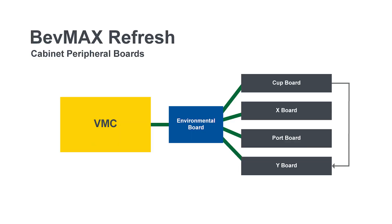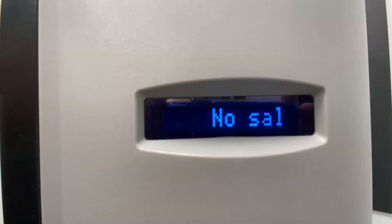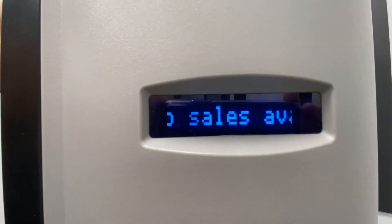If any of these boards are not communicating to the environmental board, which communicates to your VMC, then you have a communication issue and it will show no sales available.